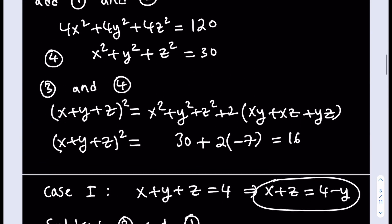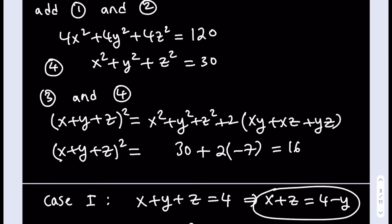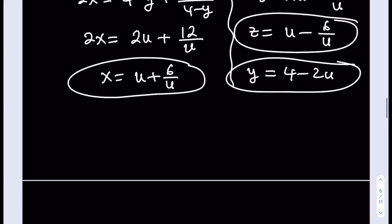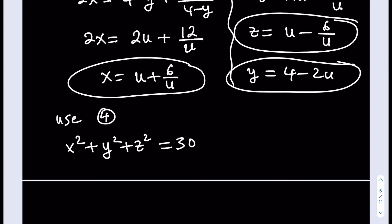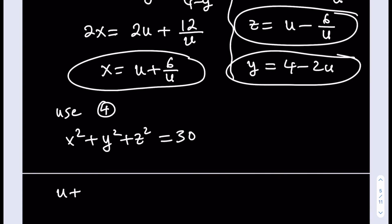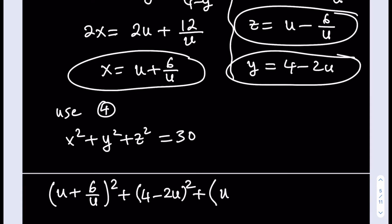Now I'm going to go back and use equation 4 — the sum of squares — and substitute all of these expressions in. Equation 4 is x squared plus y squared plus z squared equals 30. I'll replace x with u plus 6 over u, y with 4 minus 2u, and z with u minus 6 over u. All of this is equal to 30.